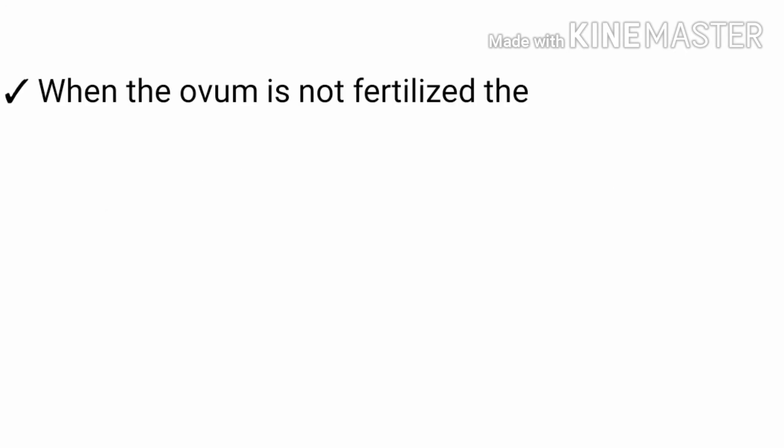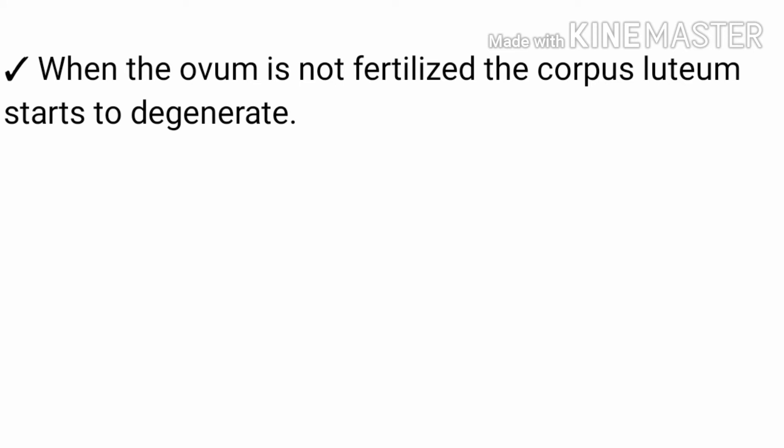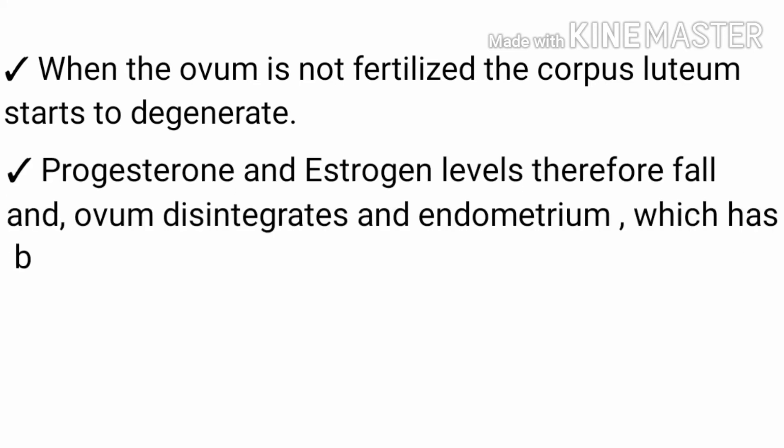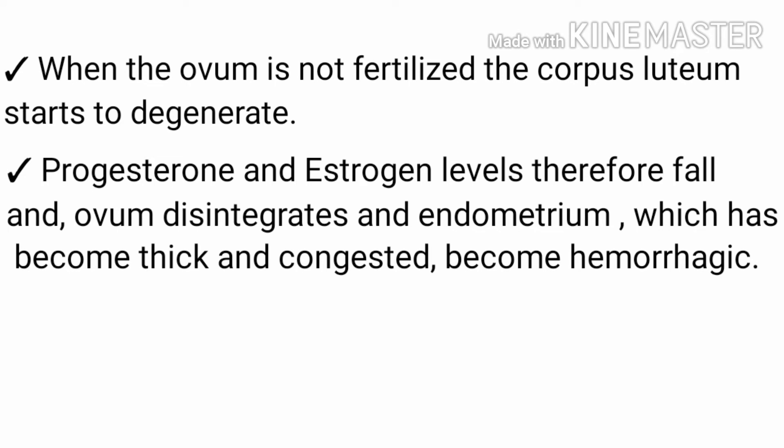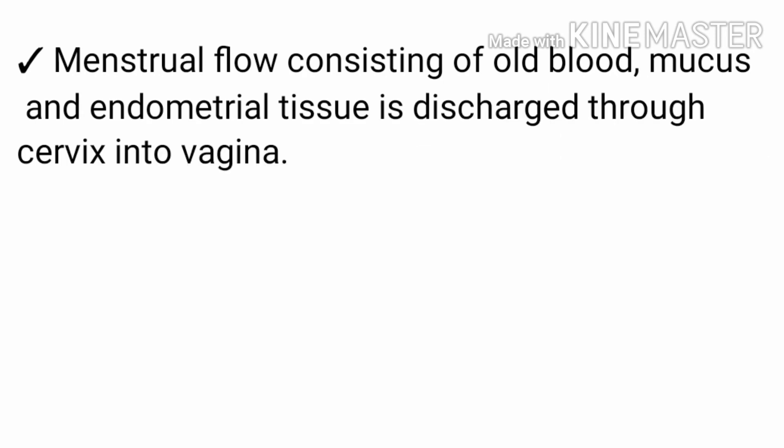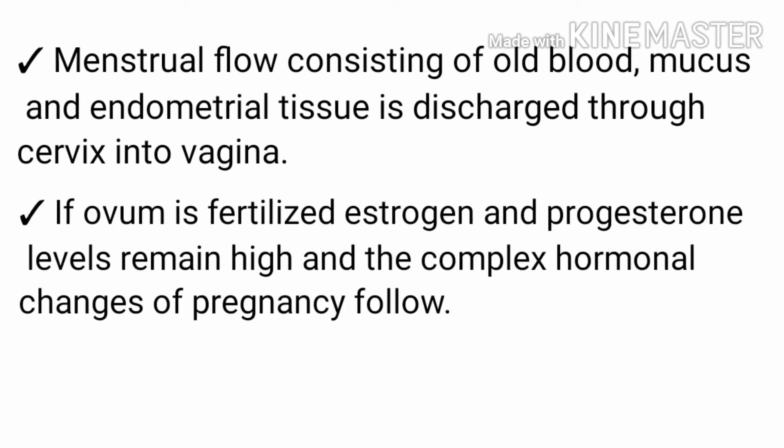Now we will learn about the first phase — the menstrual phase. When the ovum is not fertilized, the corpus luteum starts to degenerate, and progesterone and estrogen levels fall. The ovum disintegrates, and the endometrium, which has become thick and congested, becomes hemorrhagic. Menstrual flow consisting of old blood, mucus, and endometrial tissue is discharged through the cervix into the vagina. If the ovum is fertilized, estrogen and progesterone levels remain high and the complex hormonal changes of pregnancy follow.